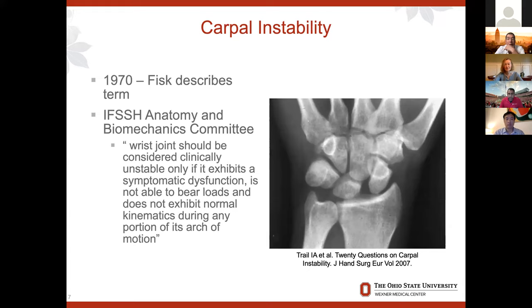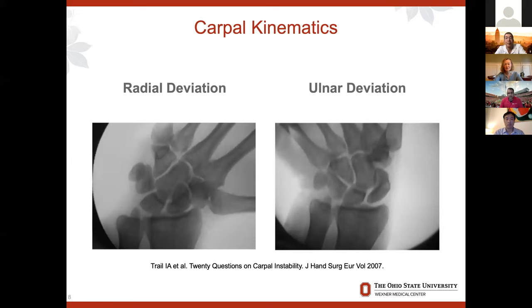We're familiar with this: when we radially deviate the wrist, we flex the scaphoid. When we ulnarly deviate the wrist, we extend the scaphoid. So let's move on to instability.